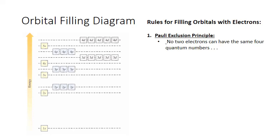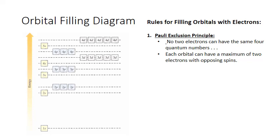The first rule is called the Pauli exclusion principle. It states that no two electrons can have the same four quantum numbers. In terms of orbital filling diagrams, this means that each orbital can have a maximum of two electrons, but those two electrons have to spin in opposite directions so that they will have two different magnetic spin quantum numbers. For example, the 1s orbital can hold two electrons, represented as arrows pointing in opposite directions, with different magnetic spin quantum numbers.